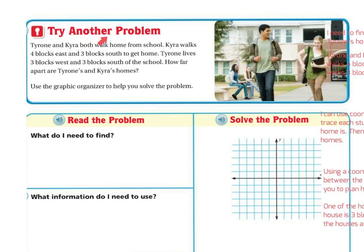Let's try another problem. Tyrone and Kyra both walked home from school. Kyra walks four blocks east and three blocks south to get home. Tyrone lives three blocks west and three blocks south of the school. How far apart are Tyrone and Kyra's homes? Use the graphic organizer to help you solve the problem.